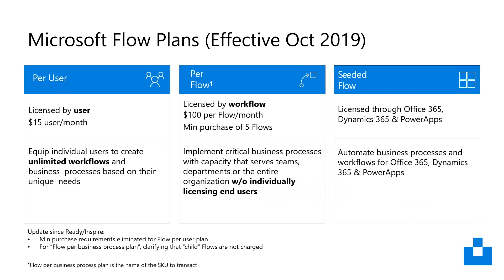Next, we'll be looking at Microsoft Flow. Flow was previously licensed with Plan 1, which had a maximum of 4,500 flows per month with a maximum frequency of three minutes, or Plan 2, which had 15,000 flows and a maximum frequency of one minute. They've changed this now so there's a per user plan where you license each user with an unlimited number of workflows and business processes, or you can license a single flow per business. You've also got seeded flows as previously available in certain Dynamics 365 and Office 365 suites, however these have changed and need to be within the context of the app.